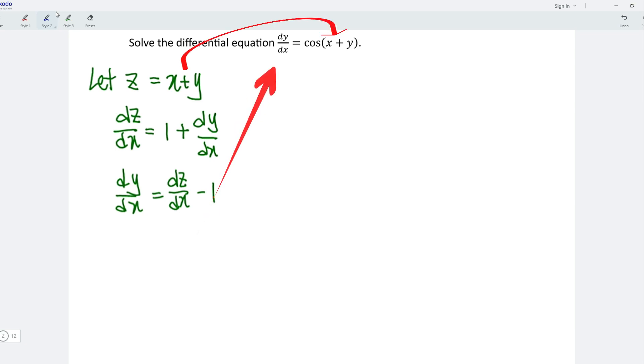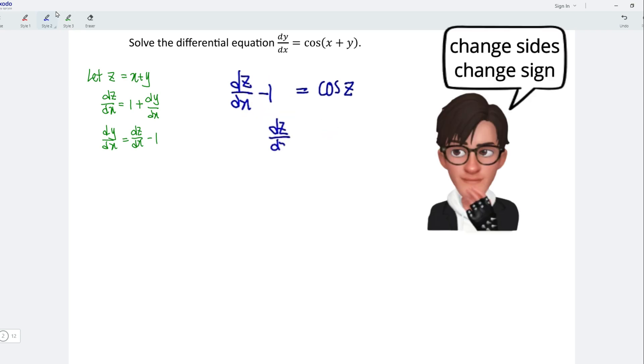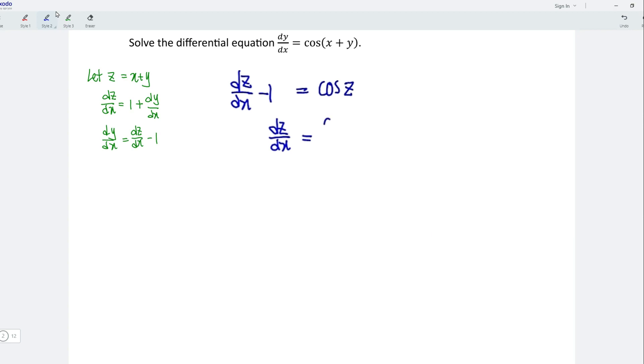Now substitute the two equations that we obtain into the differential equation, which means we should have dz/dx minus 1 equals cos z. Let's rearrange the equation by moving minus 1 to the right. Remember, when we change the side, we should change the sign. In other words, minus becomes plus. And this is simply equal to cos z plus 1 divided by 1.